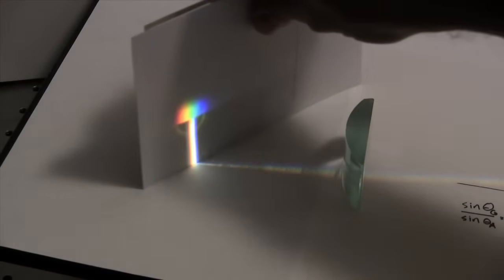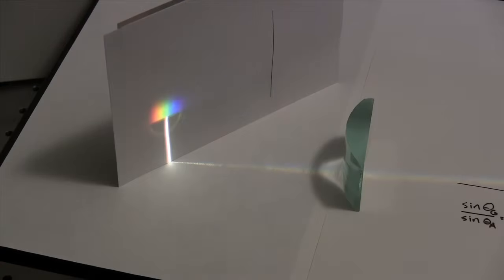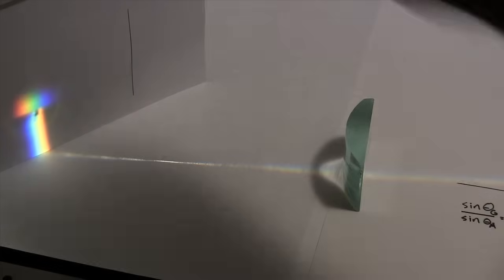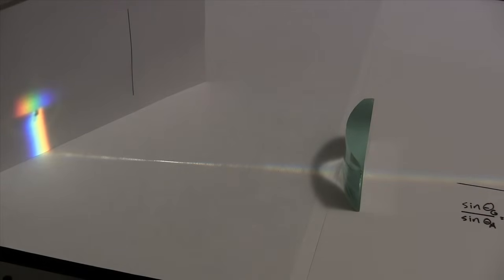The colors begin to overlap until at one point we see a band of white light. As we continue to move the screen further away, we see the same spectrum that we started with, but with the colors now reversed.